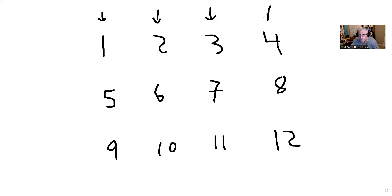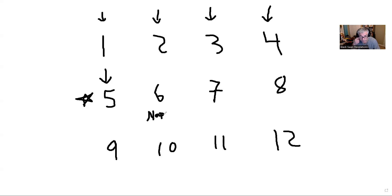Six is a bullet — six bullets in a gun, six feet under. Naphtali is six because when you die in Christ you are asleep in Christ, so you're taking a nap. Seven is dice, and that's Gad — Gad is awful at rolling dice and rolling sevens. Eight is an hourglass, and Asher is eight.